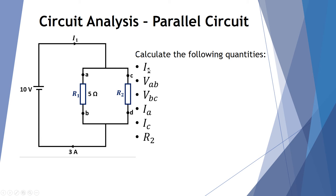In this investigation we're going to calculate I1, the voltage between points A and B — which is the voltage across R1 — the voltage between points C and D — which is across R2 — the current in the first branch, the current in the second branch, and the resistance of the unknown resistor R2.